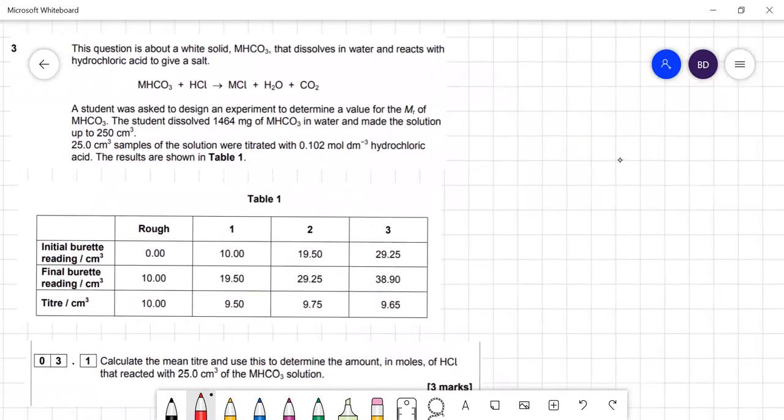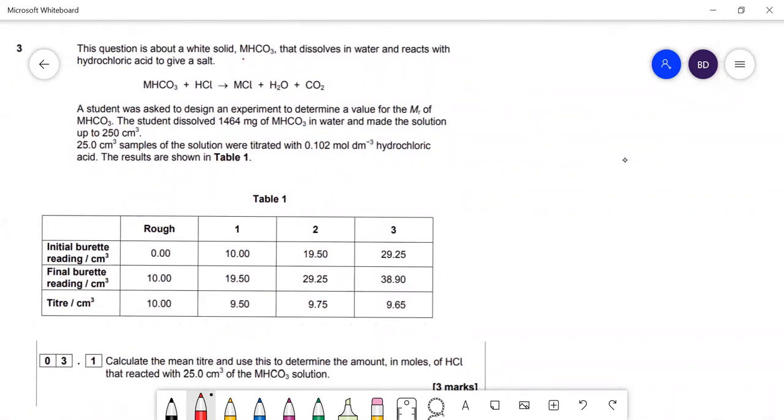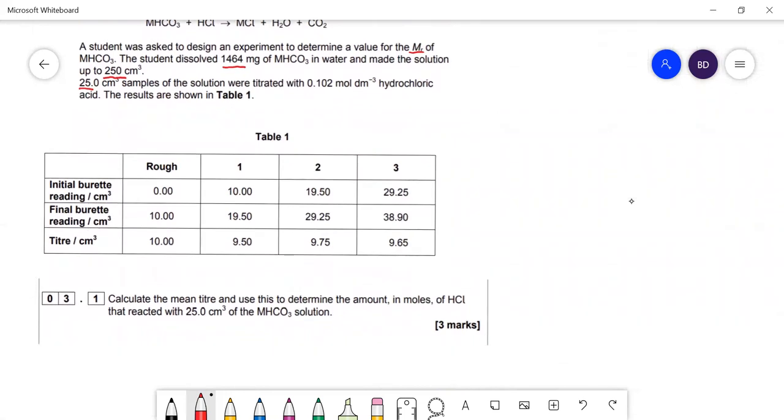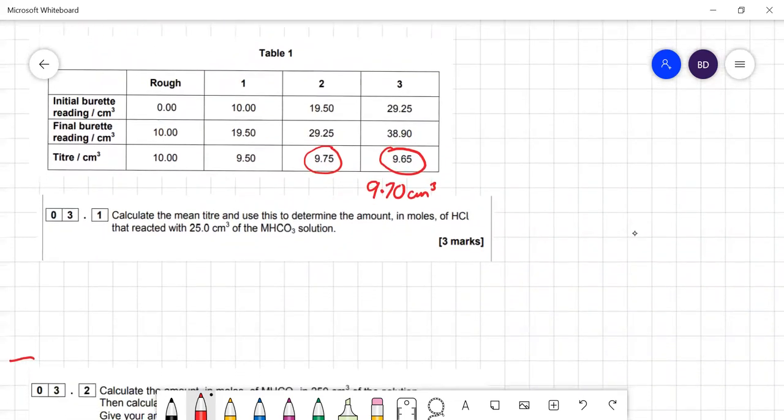There's a titration question. A metal carbonate reacts with hydrochloric acid in a one to one ratio. Calculate the mean titer using only concordant titers within 0.1 cm³. So the mean would be 9.70 cm³.